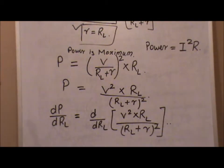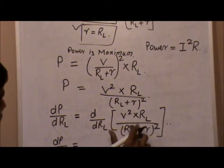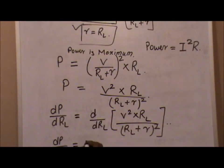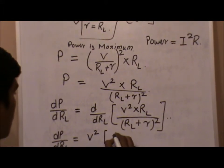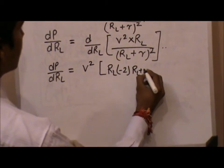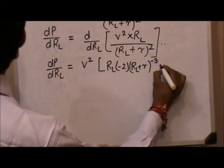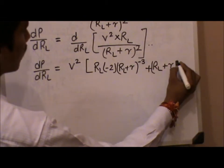By solving using the product rule or division rule for differentiation, we get dP/dRL equals V squared times: RL times minus 2 times (RL plus r) to the power minus 3, plus (RL plus r) to the power minus 2. I took the denominator term upward with a negative sign and then applied the product rule.